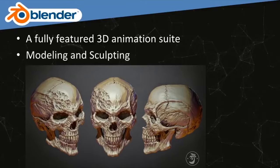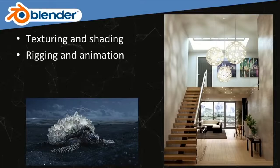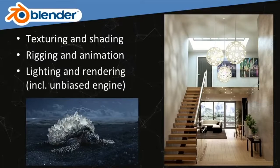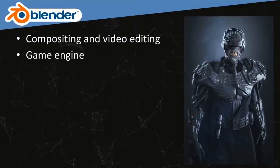It's full-featured — it has modeling and sculpting tools, as well as texturing and shading, lighting, rigging and animation, and rendering. It actually has two rendering engines: one is called the Scanline Engine, a simple one for stylized graphics, and the other is a photorealistic path tracer called Cycles. There are also compositing and video editing tools, and a full-featured game engine with logic and scriptability.